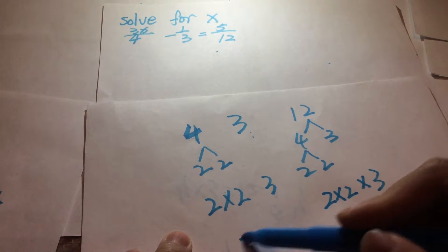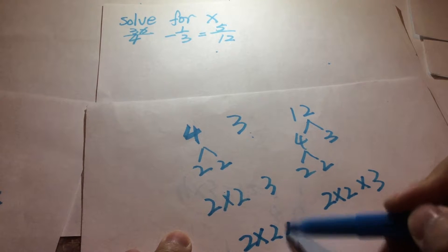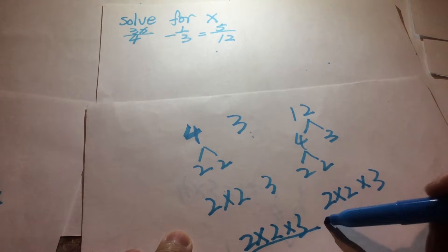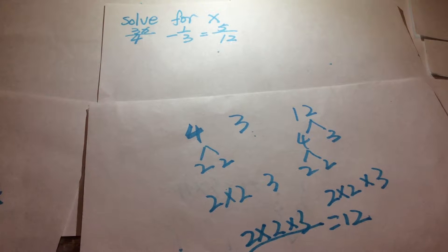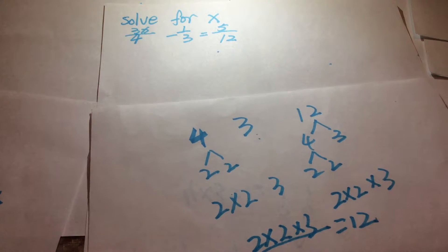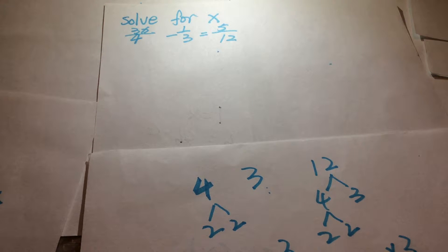So the least denominator is going to be 2, 2, and 3. That's going to be 12. So the first step we did is find the common least denominator, it's going to be 12.